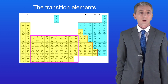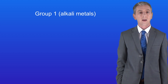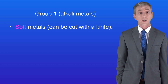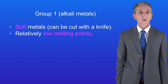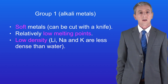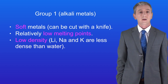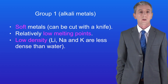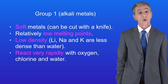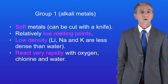We're going to start by recapping the metals that we've already looked at, those in group 1 which we call the alkali metals. The alkali metals are soft and they can be cut with a knife. They also have relatively low melting points and low density. In fact the first three alkali metals — lithium, sodium and potassium — are less dense than water. The alkali metals all react very rapidly with oxygen, chlorine and water.